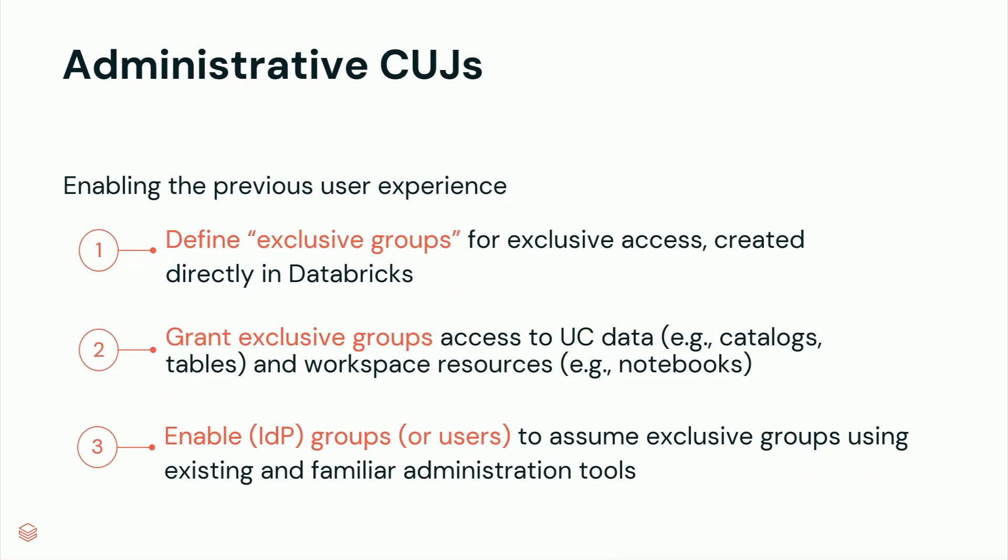Now, how do we go ahead and set it all up? It's very simple — three steps. First, we define these exclusive groups. Second, we give access to our data to these groups. And third, we take our users and identity provider groups and give them the ability to assume these new exclusive groups. Let's take a look at each one step by step.